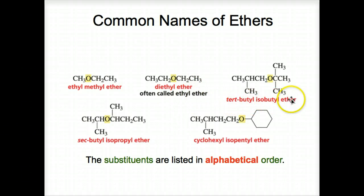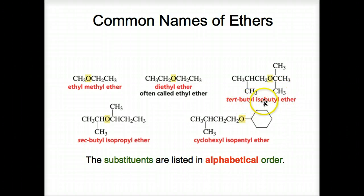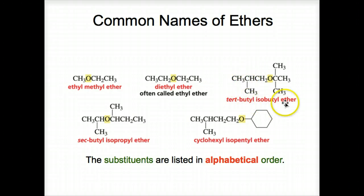Tert-butyl isobutyl ether — there's the oxygen. This is the tert-butyl substituent, in the tert arrangement with four carbons. And the isobutyl — notice this is a branched four-carbon group, so we call it isobutyl ether: tert-butyl isobutyl ether.